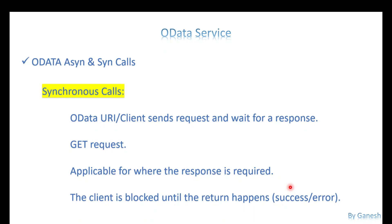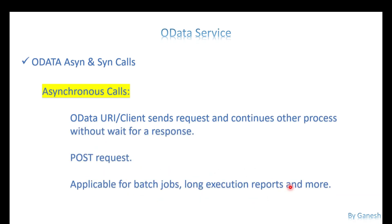Asynchronous calls mean the client sends a request and it won't wait for the response — instead it starts continuing other processes. If it's synchronous, it has to wait until process A completes before starting B. But in asynchronous, it sends the information for A and without waiting for A's response, it automatically goes to B and starts process C.